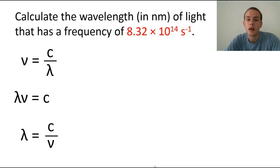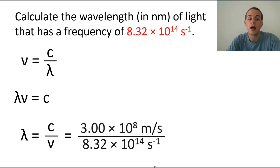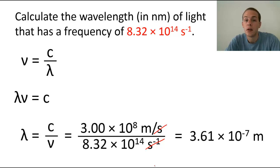And so we simply plug in the information here. So c, that's the speed of light. That's going to be 3.00 times 10 to the 8 meters per second. And then nu, that's the given frequency, is 8.32 times 10 to the 14 inverse seconds. We can see here that inverse seconds are going to cancel out and our wavelength is going to be reported in meters. So we're going to get 3.61 times 10 to the negative 7 meters.